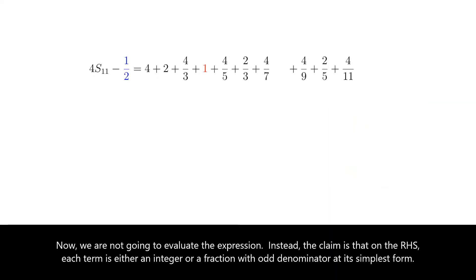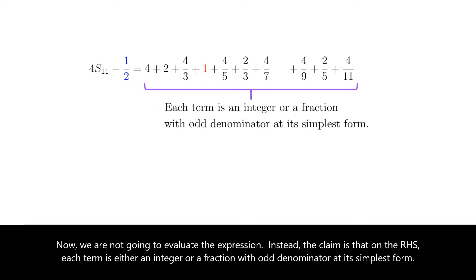Now, we are not going to evaluate the expression. Instead, the claim is that on the right-hand side, each term is either an integer or a fraction with odd denominator at its simplest form.